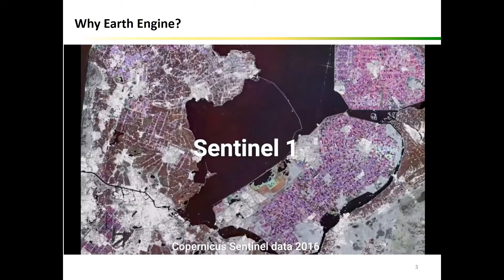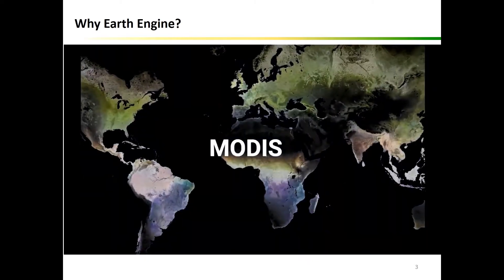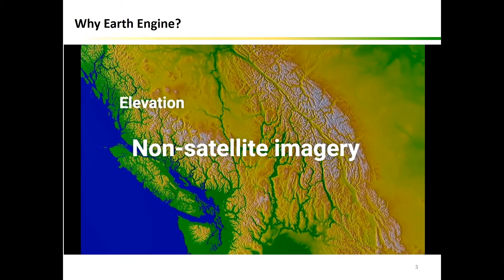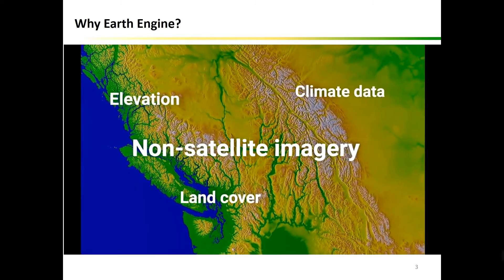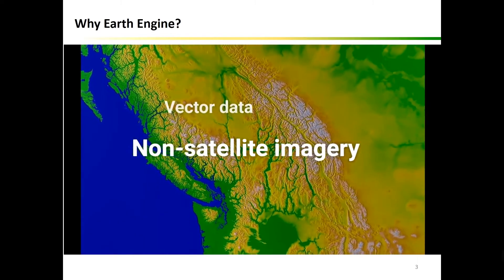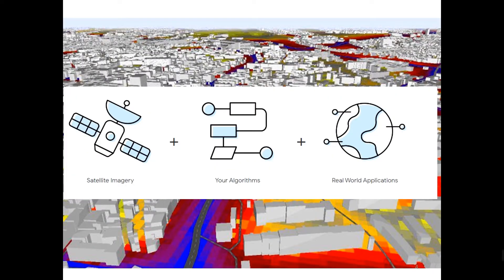Google Earth Engine combines a multi-petabyte catalog of satellite imagery and geospatial datasets with planetary-scale analysis capabilities, and it makes it available for scientists, Earth researchers and developers to detect changes, map trends and quantify differences on the Earth's surface. This enables cutting-edge global-scale analysis and visualization, and we are going to learn it in our course.